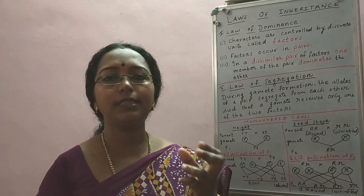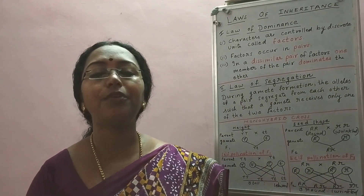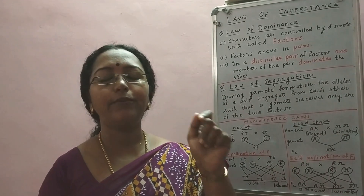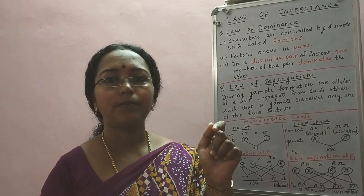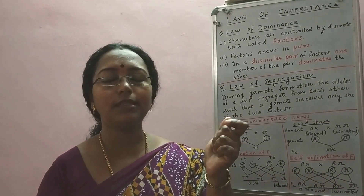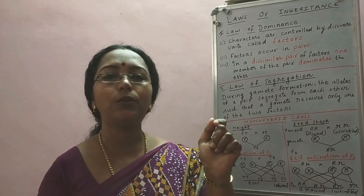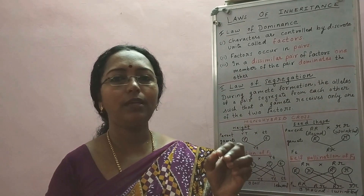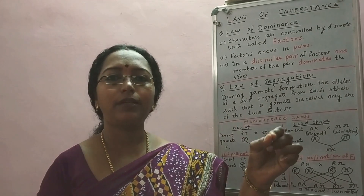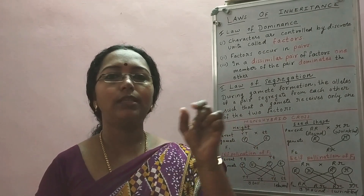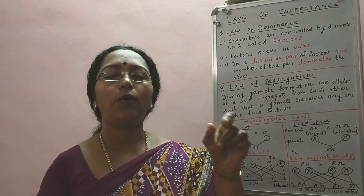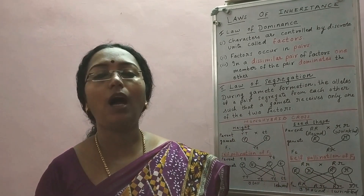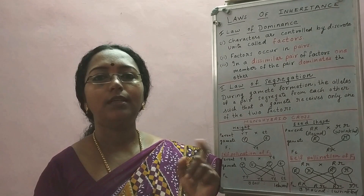Let us learn how to find out the genotype of a plant. We can easily state its phenotype because phenotype is the external appearance, but we cannot say whether it is homozygous or heterozygous. Homozygous means the alleles inside are the same; heterozygous means the alleles are different. Let us see how to find out this difference.